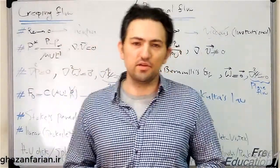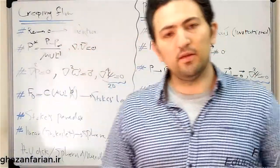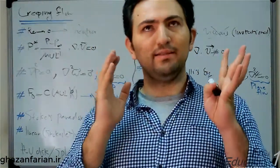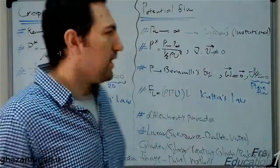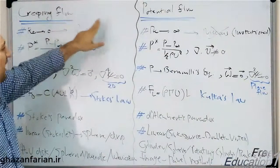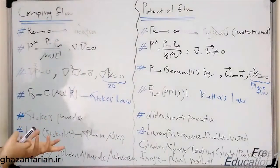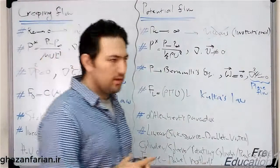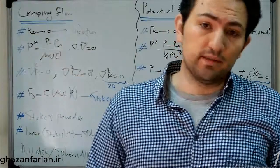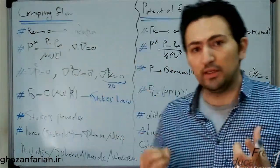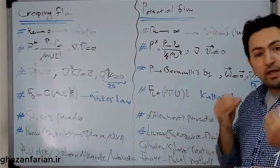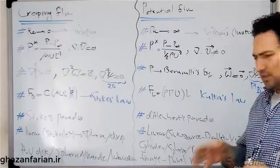Hi everybody, thanks for watching my lectures. The topic of today's lecture is the comparison of two well-known and important flows: the creeping flow, also called the Stokes flow or the low Reynolds number flow, and the potential flow. These flows are very similar but have many important differences, so it's important to completely understand the similarities and differences between these two applicable flows.